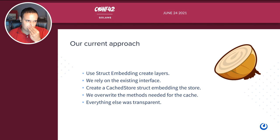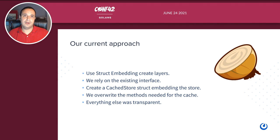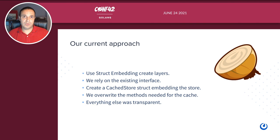Our current approach uses struct embedding. Instead of creating all this middleware logic, we take advantage of Go's struct embedding feature to create these layers. A store concept gets embedded in another store. We can create a layer that embeds the store and automatically it becomes a store because it embeds a store. We rely on the existing store interface, remove the layered store suppliers, and we created this local cache store that embeds the SQL store in it. We overwrite only the methods we need, and everything else is transparent.